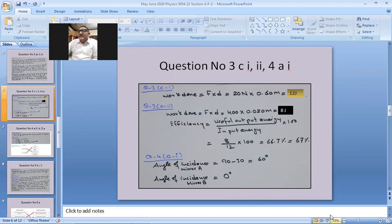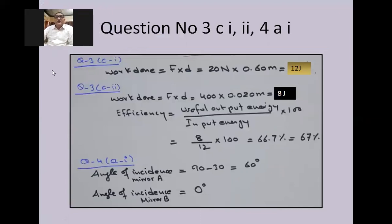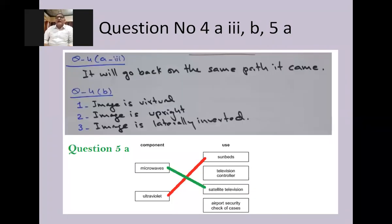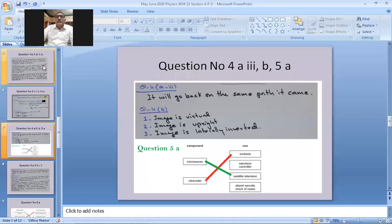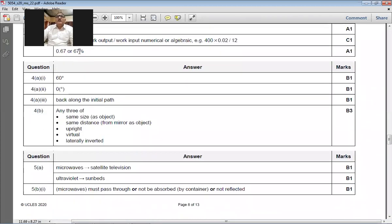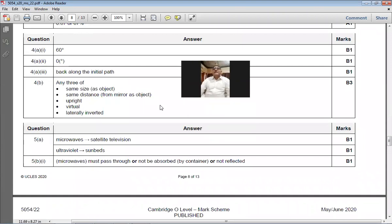State three characteristics of the image formed in a plane mirror: the image is virtual; the image is erect (upright); the image is laterally inverted; the image is the same size as the object; the distance of the image behind the mirror equals the distance of the object in front. Only three are required. The marking scheme confirms our answers for question 4 are all correct.